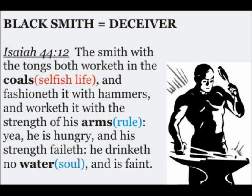From Isaiah 44:12, the smith with the tongs both worketh in the coals, which means selfish life, and fashioneth it with hammers, and worketh it with the strength of his arms, or rule. Yea, he is hungry, and his strength faileth, he drinketh no water, or soul, and is faint.